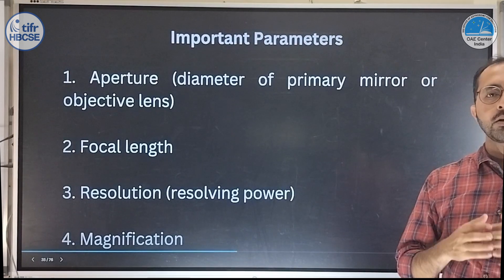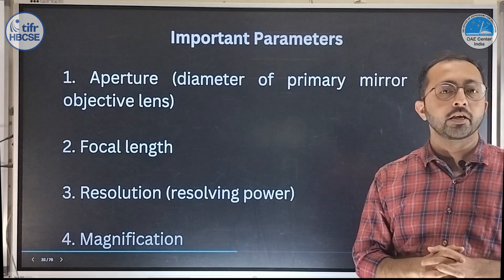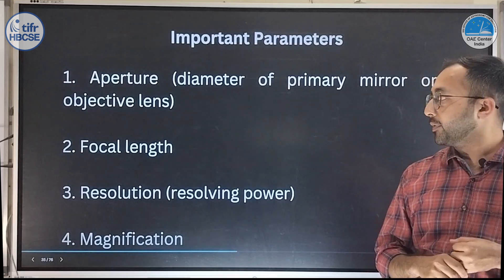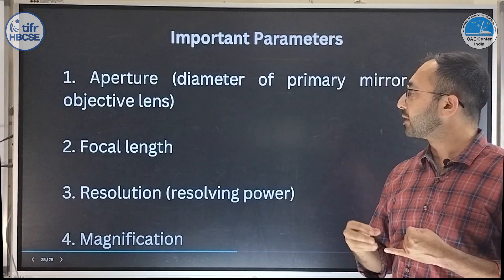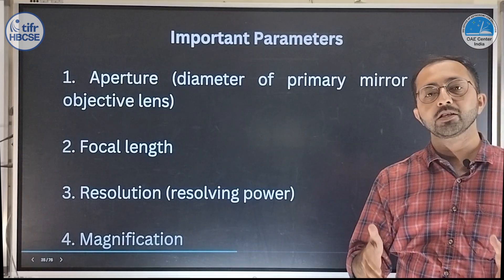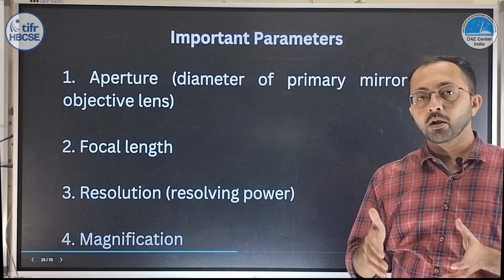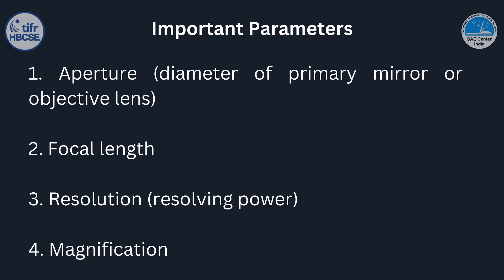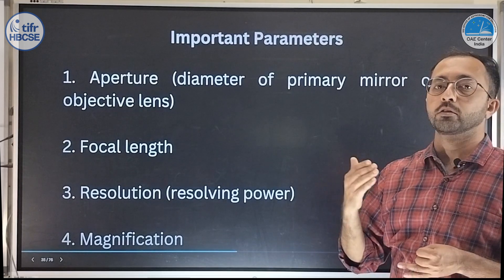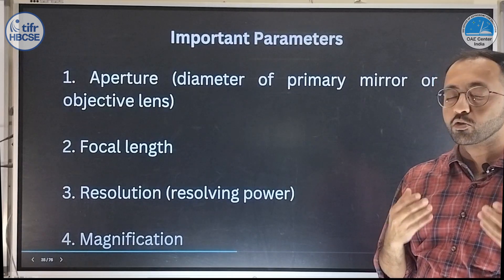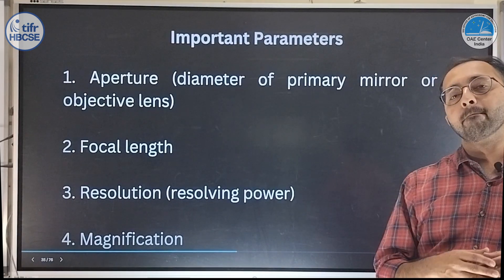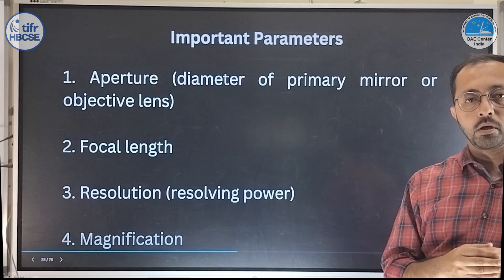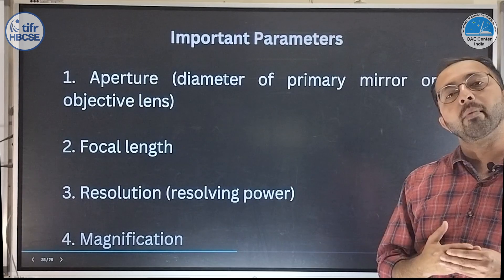When talking about telescopes, there are some important parameters to consider — for instance when buying a telescope or calculating what you can observe. First is the diameter or aperture of the telescope, which is the size of the primary mirror or objective lens. Second is the focal length of the telescope — the focal length of the primary mirror or objective. Third is the resolving power of the telescope. And fourth, the maximum magnification achievable. We will talk more about these in upcoming videos and work through formulas to calculate the resolution and magnification of a telescope.